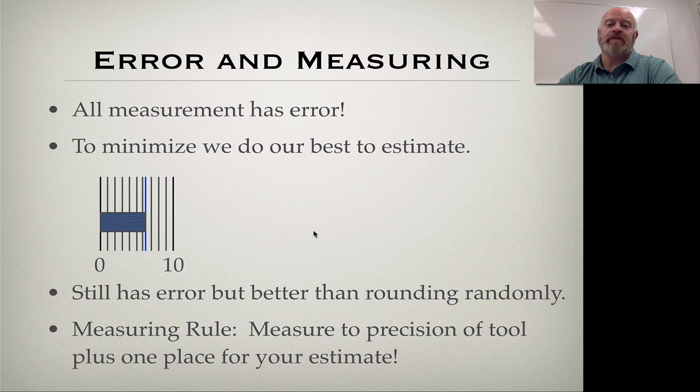So our estimate now becomes that decimal, where it's 6.3, and because we know it's at least 6 and it's not yet 7. So every time you measure, you can measure to the precision of your tool, plus that estimate.